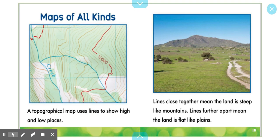Maps of all kinds. A topographical map uses lines to show high and low places. Lines close together mean the land is steep, like mountains. Lines further apart mean the land is flat, like plains.